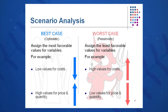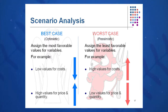Best case: we have low values for cost and high values for price and quantity. In the worst case, we have high values for costs, both fixed and variable, and low values for price and quantity. Somewhere in the middle of those two scenarios is what you think is your most reasonable, or base case.